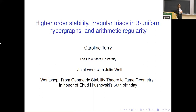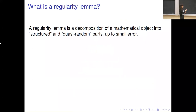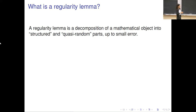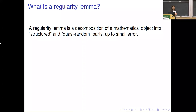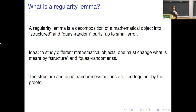I'll start with some background — it'll be more of a big-picture talk versus the talks in the seminar, so hopefully people will still find that interesting even if you attended the seminars. The first general question is: what is a regularity lemma? A regularity lemma is a decomposition of a mathematical object into a structured and quasi-random part up to small error. The structure notion and the quasi-random notion you pick are tied together via the proofs.